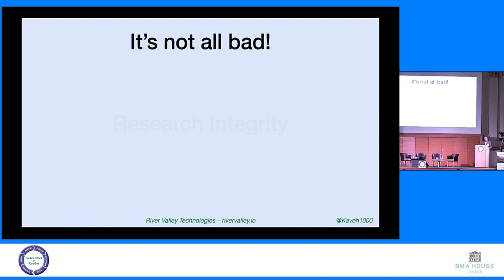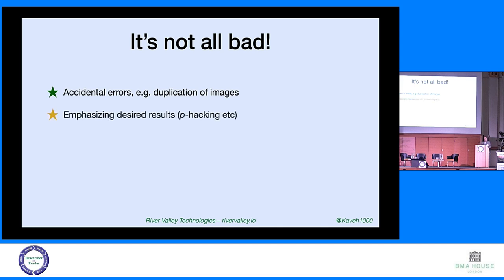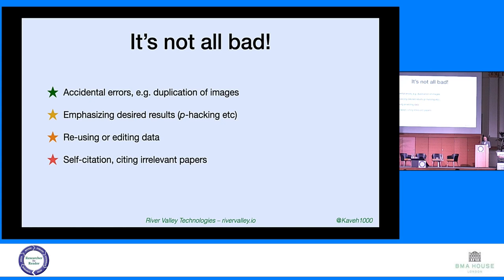So, research integrity — it's not all bad. There are different levels of research misconduct. There are accidental errors — someone might put the wrong image in, so you can't blame them. But then you get into emphasizing positive results, p-hacking, etc. Reusing or editing data is not really good. Too much self-citation or citing irrelevant papers — not good at all. Up to the extreme things like buying authorships — definitely bad.